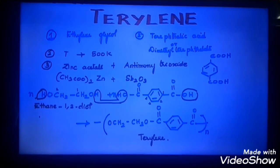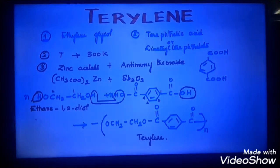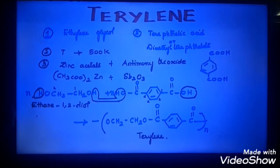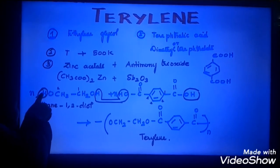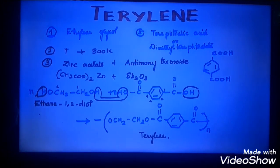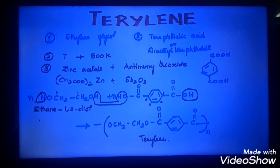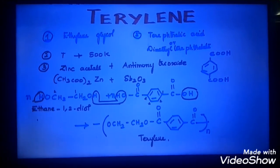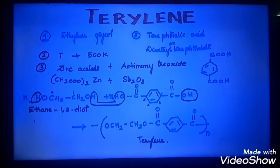How many water molecules are released? Each repeat releases two water molecules — that is 2N water molecules. But at the initiation part one H remains as it is, and at the termination part one OH remains as it is. So it is not 2N water molecules — it is 2N minus 1 water molecules released. In this reaction the temperature required is around 500 Kelvin, and zinc acetate and antimony trioxide (Sb₂O₃) are used as catalysts.